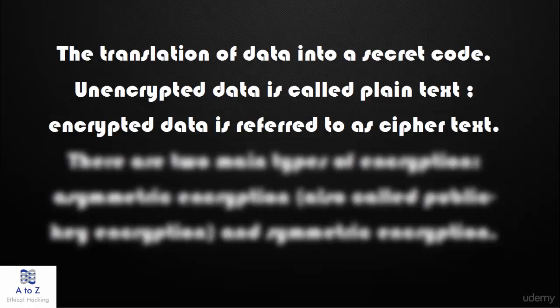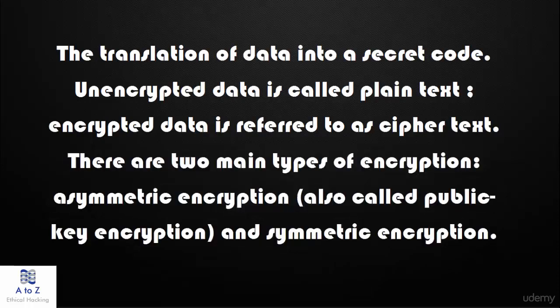Unencrypted data is called plain text. Encrypted data is referred to as ciphertext. There are two main types of encryption: symmetric encryption, which is also called public encryption.